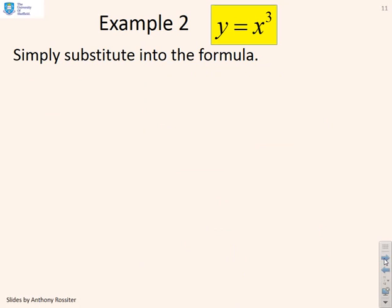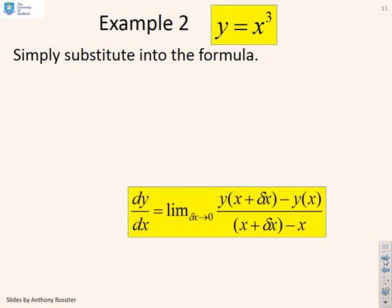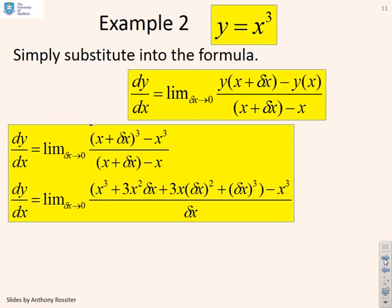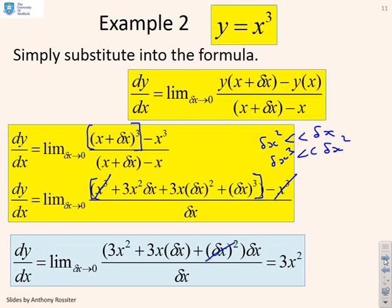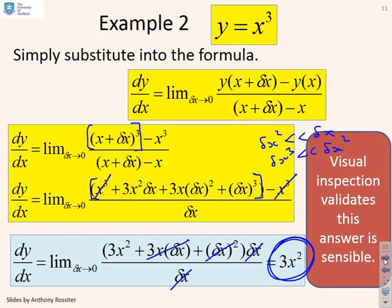Example 2: y equals x cubed. We do the same trick and plug it into the limiting formula. We get (x + delta x) cubed minus x cubed in the numerator. Expanding gives a long expression; the x cubed terms cancel, and terms involving delta x squared and delta x cubed are much much smaller than delta x, so we eliminate them, cancel the delta x on top and bottom, and get left with just 3x squared. You could again use visual inspection to validate this is a sensible answer.